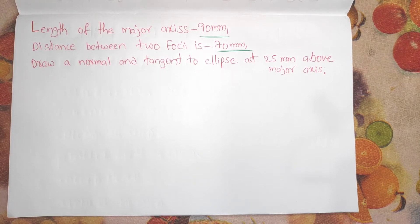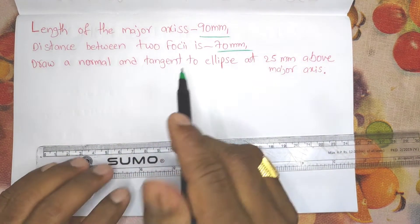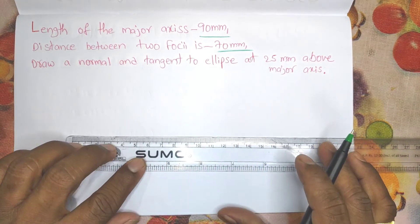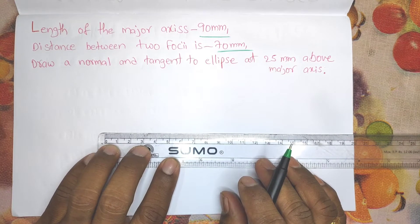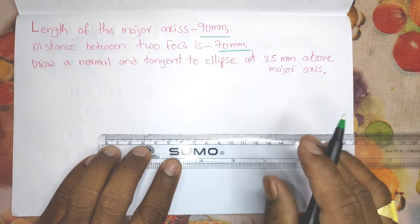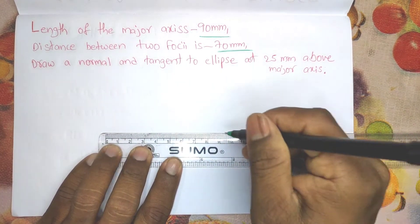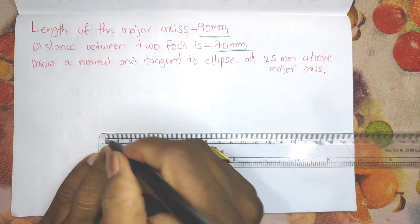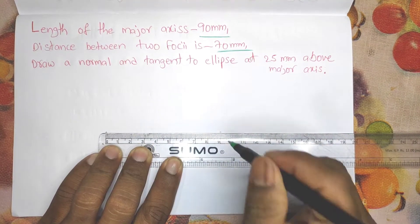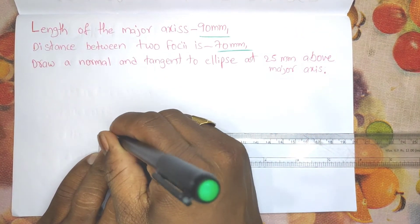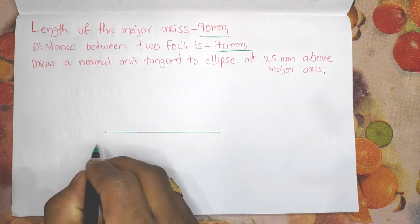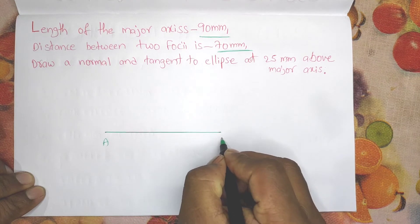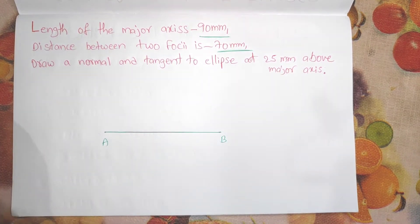So what is the length of the major axis? 90mm. So draw the major axis — 90mm. This is one point and this is another point. So first, draw the major axis. This is the major axis A–B.